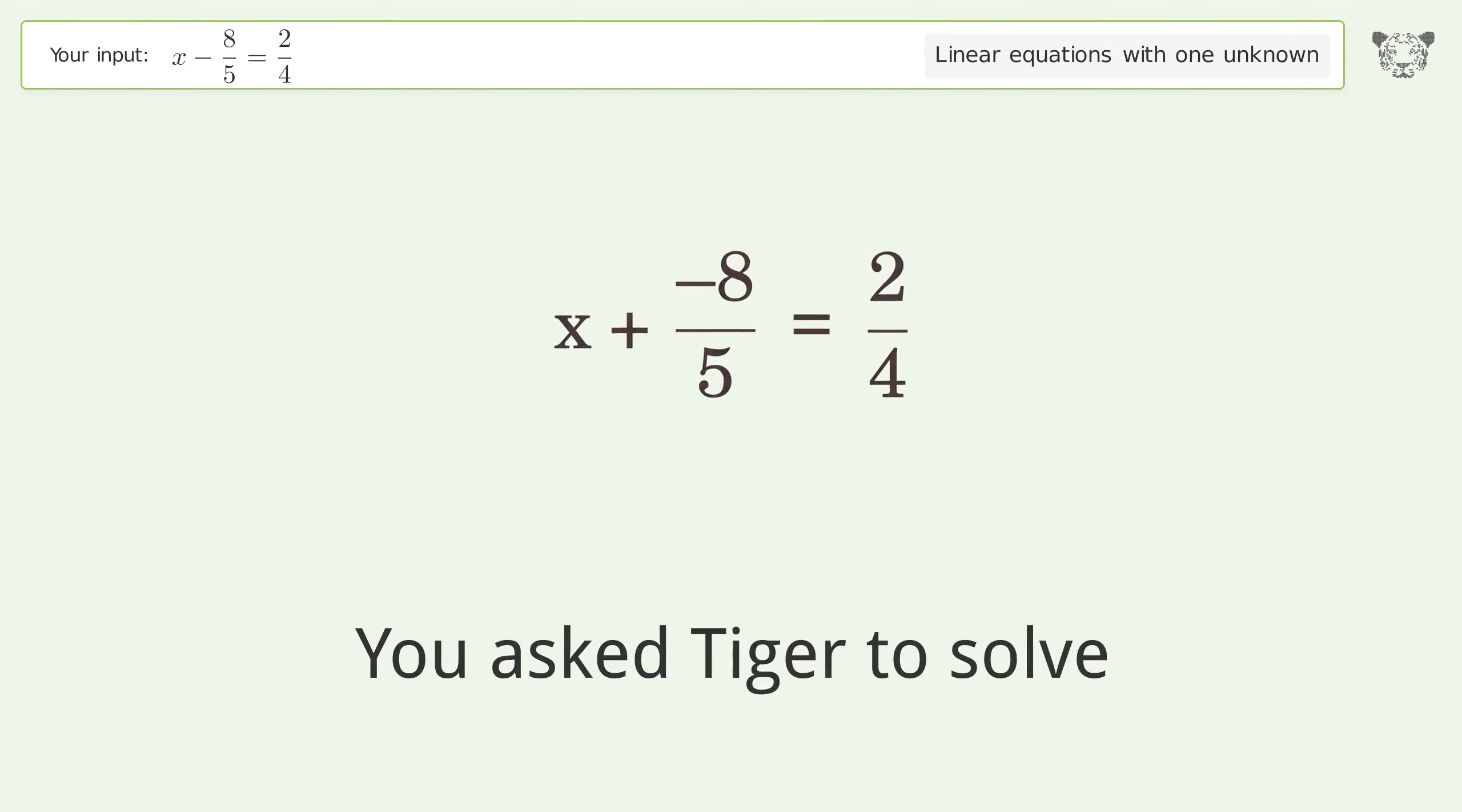You ask Tiger to solve this. This deals with linear equations with one unknown. The final result is x equals 21 over 10.